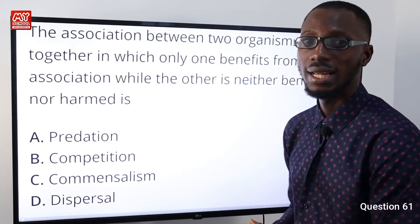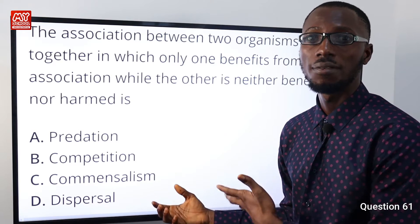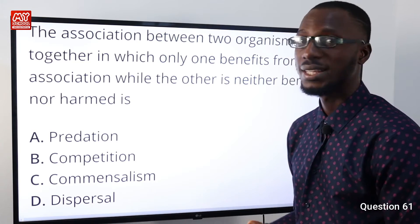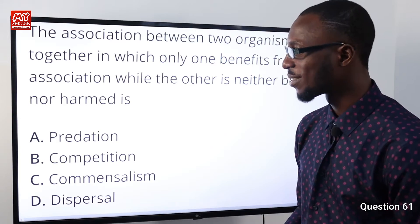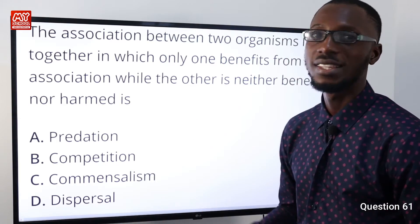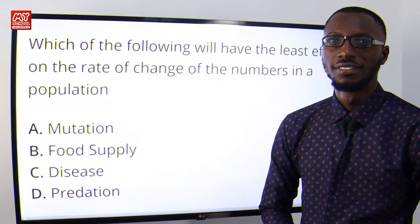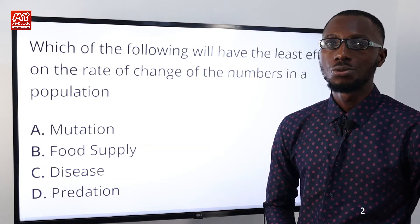An example of commensalism is the remora fish and the shark. The list is endless, so option C is very correct. Question number 62.